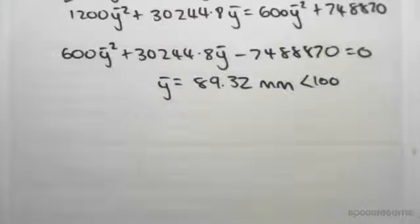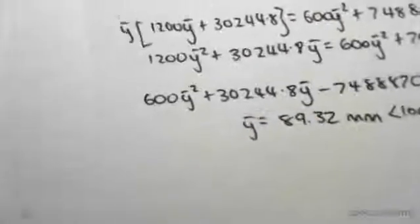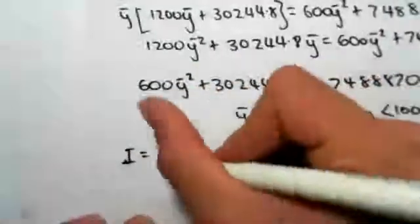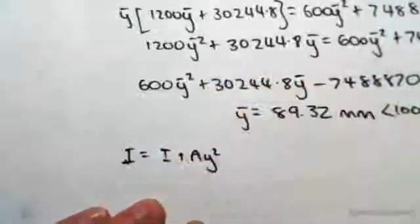Hey guys, I'm continuing straight on from the previous video. We're now up to finding the I value. Once again, we're going to be using the parallel axis theorem, which is I equals I plus Ay squared.